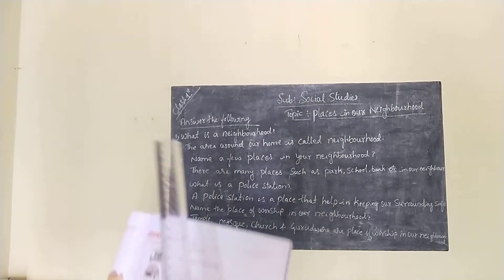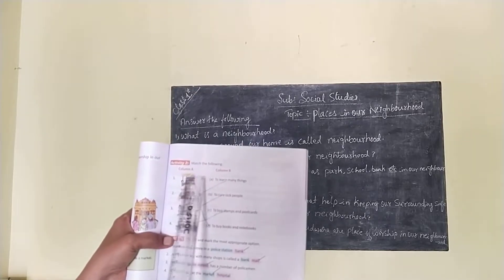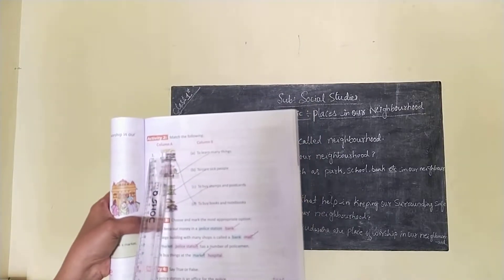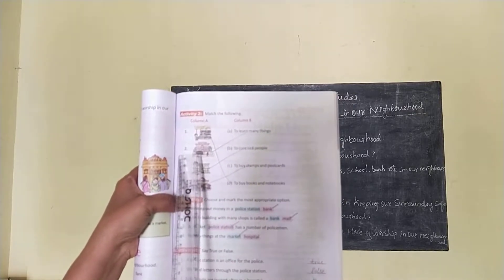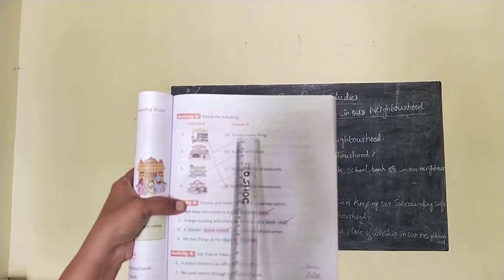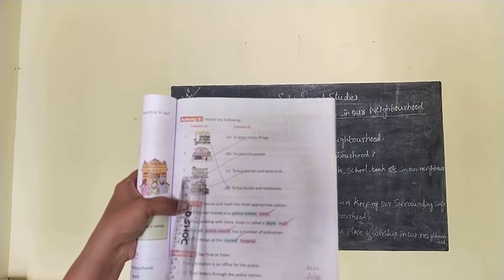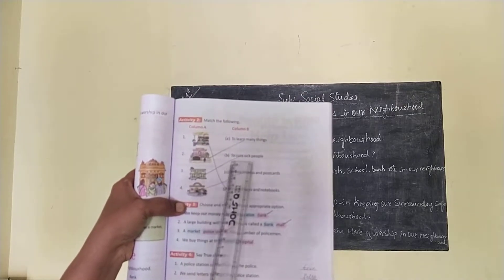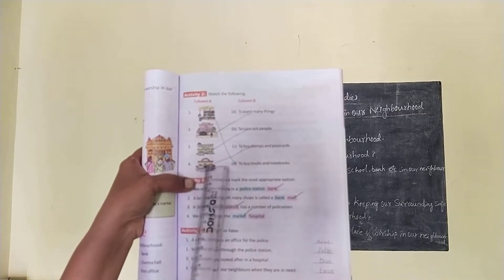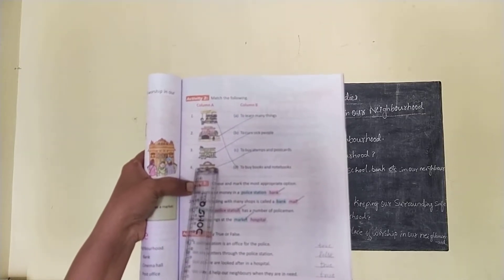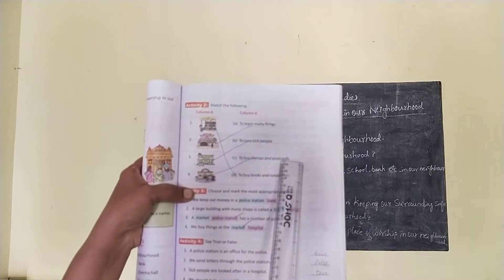Here, match the following. Stationery — to buy books and notebooks. School — to learn many things. Hospital — to cure sick people. Post office — to buy stamps and postcards.